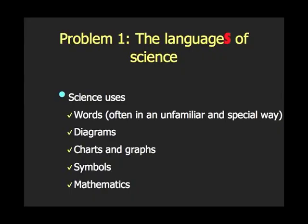So the problem with science is not the language of science, but the languages — the plural — in the sense that science uses all of these things: words, and often in unfamiliar and special ways; diagrams, charts and graphs; symbols and mathematics. It uses those in order to construct meaning. The phrase used for this these days is multimodal or multisemiotic. Increasingly, all forms of communication have gone that particular way. Even presenters are forced into using pictures because we know those things communicate things which words don't do so well.